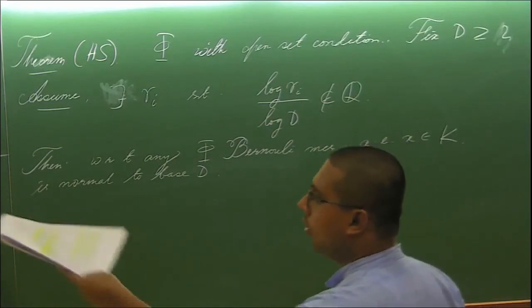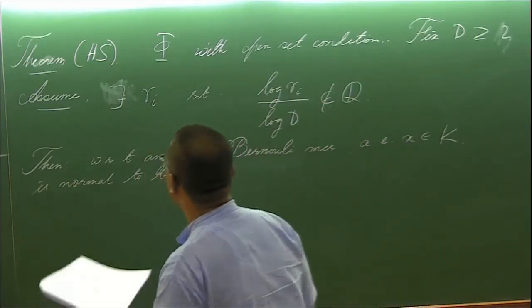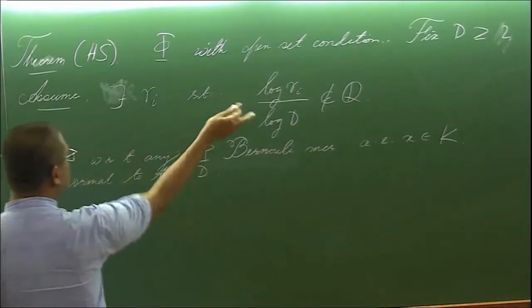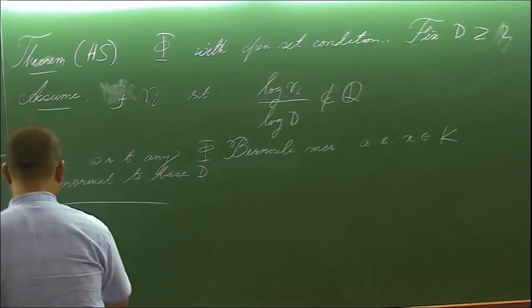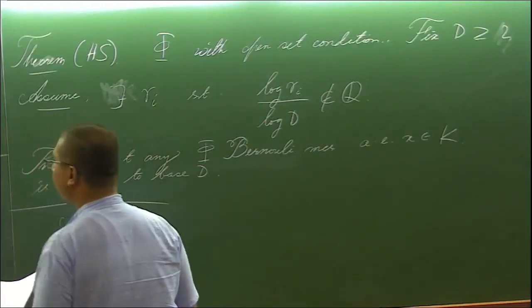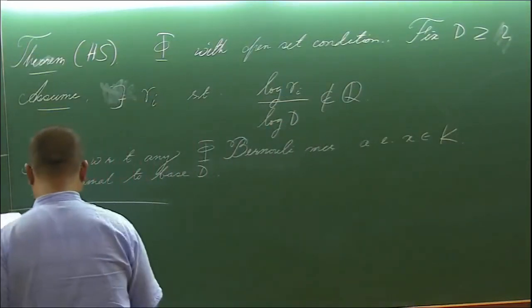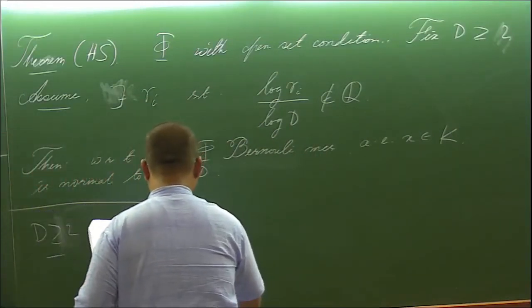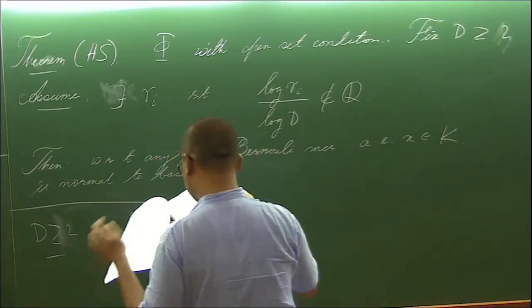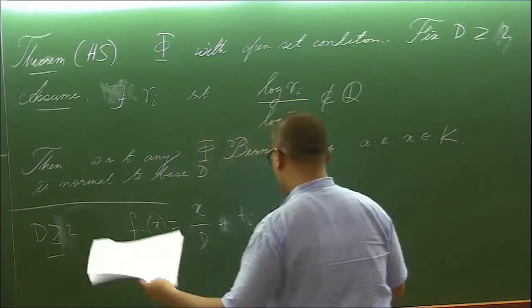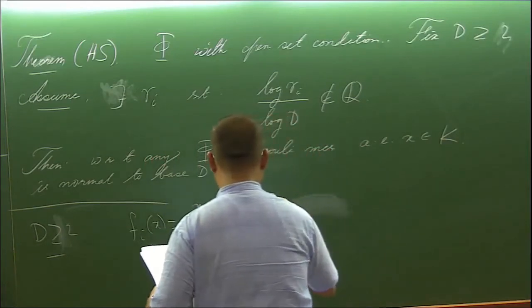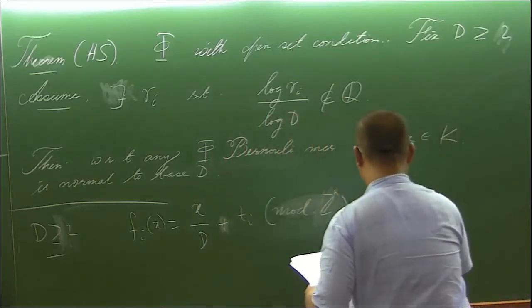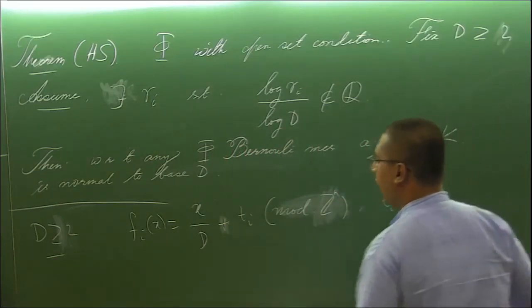As I said that they assumed some independence condition on the contraction ratios and the base under consideration. In our ongoing project, we are dealing with a completely opposite of this situation. Instead of considering the basis are independent of the contraction ratios, we will rather work with this system where the base and contraction ratio are just reciprocal to each other. So what we do is, again fix a positive integer d, define Fi to be x by d plus some Ti.